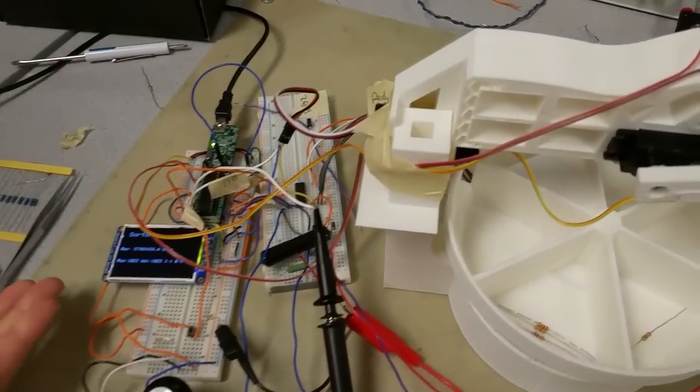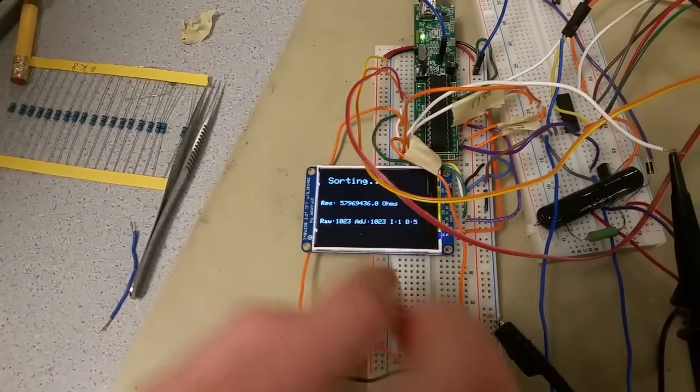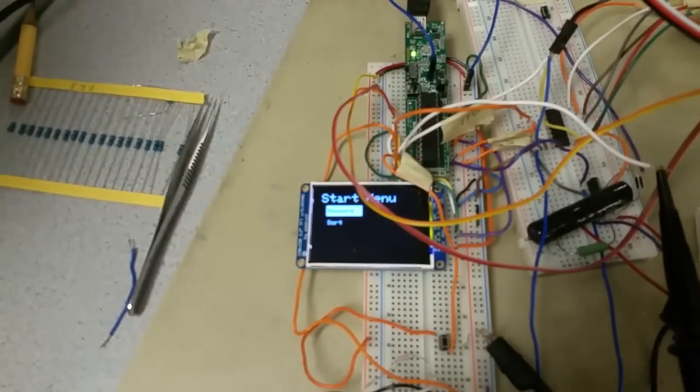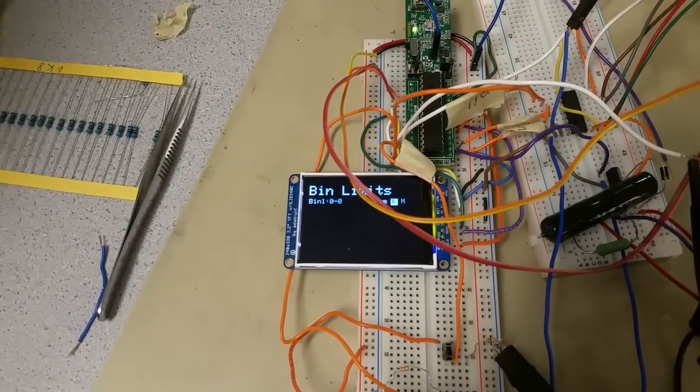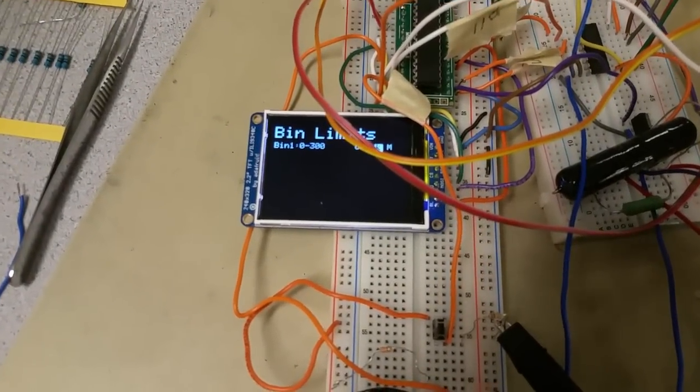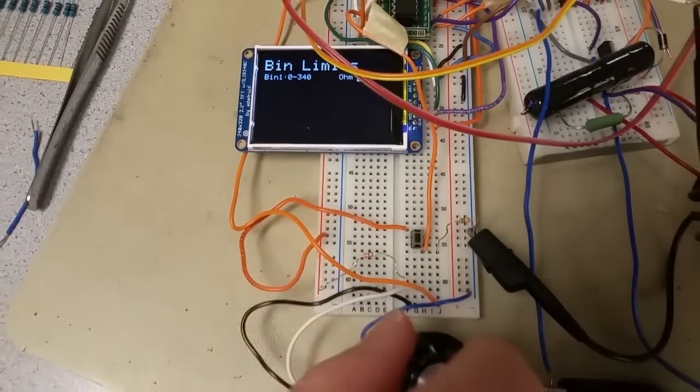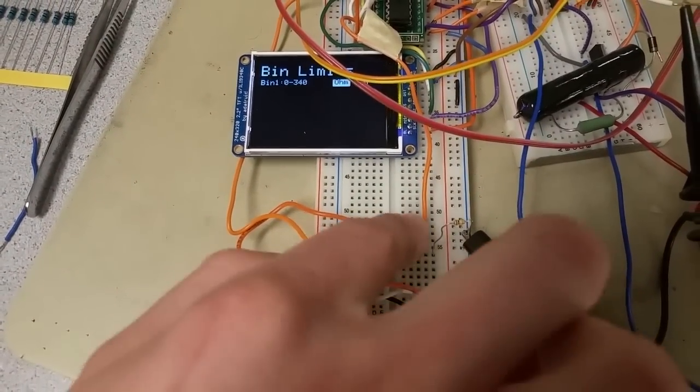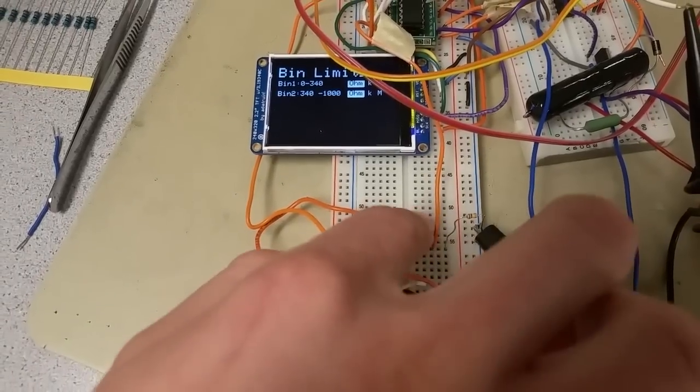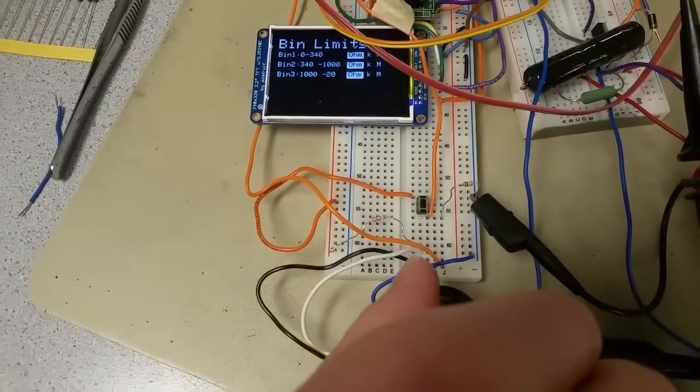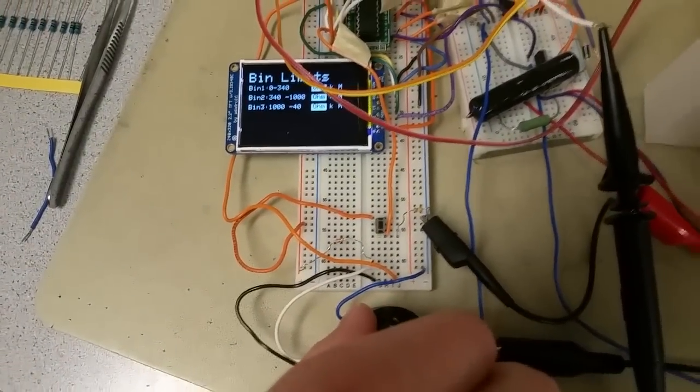You can also set custom bin limits. We have the logarithmic bin limits, but if I reset this I can show you the custom bin limits. You can set different bin limits - say 30 to 140 ohms, this one up to 1,000 ohms, and this one to maybe 40K.